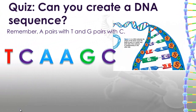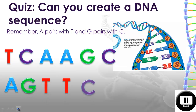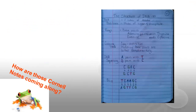Let's try another one. What would the complementary sequence be for T, C, A, A, G, C? Press pause and write that down in your notes. If you came up with A, G, T, T, C, G, then you're right — good job! Make sure you've got that idea in your notes, because it's a pretty important concept. Press pause if you need to.